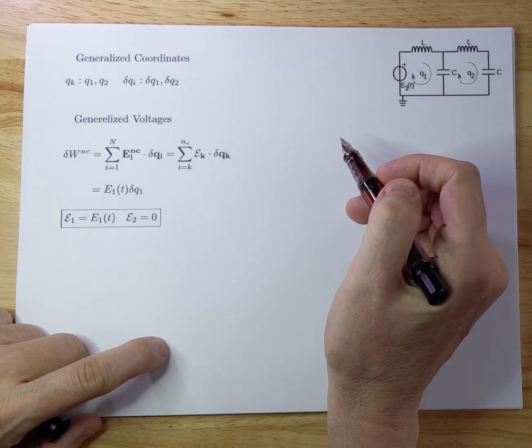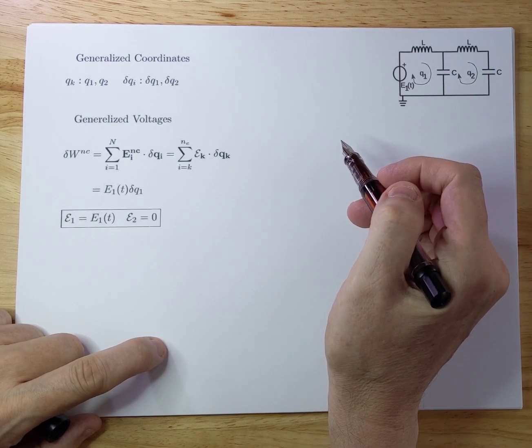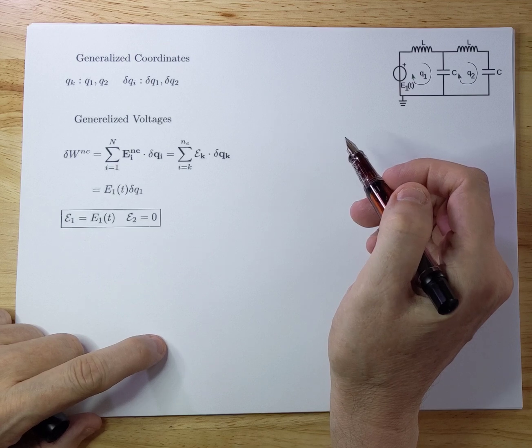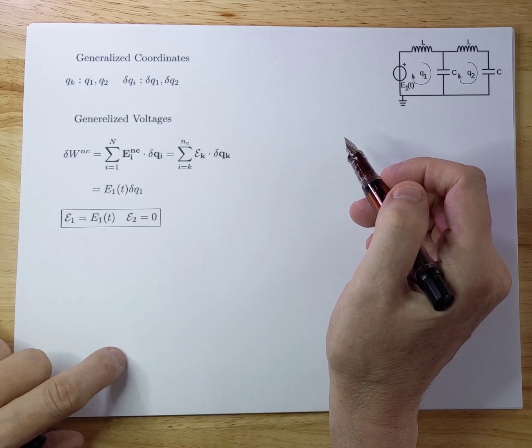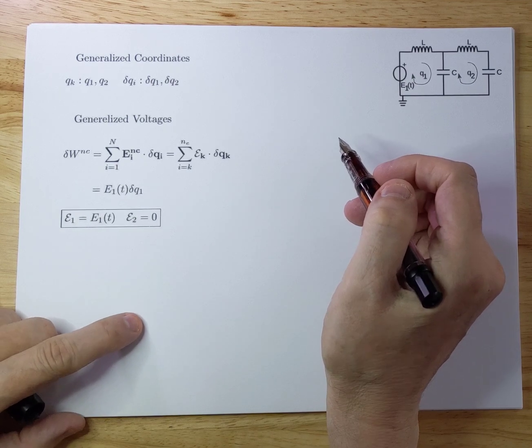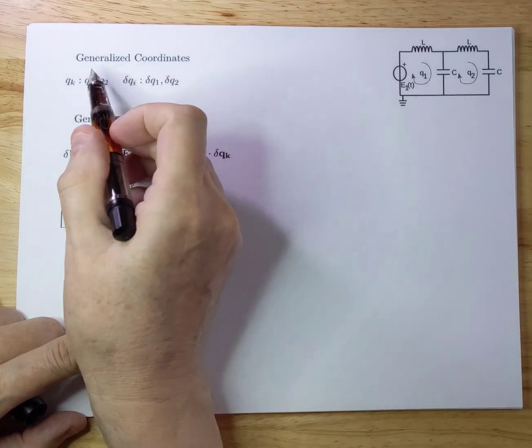And I'm going to use the Lagrange equation for this. We will see that it is quite convenient and easy to do. So in order to do that, we need to first determine our generalized coordinates.